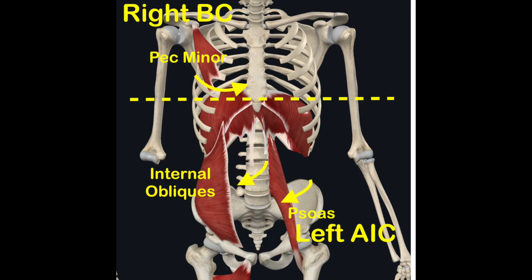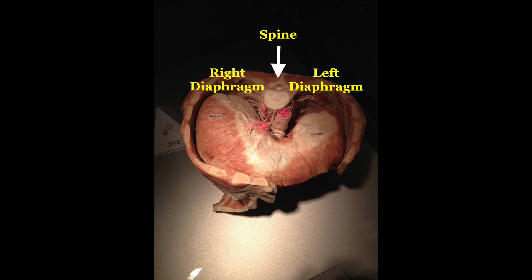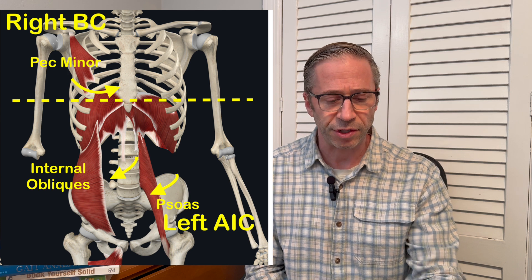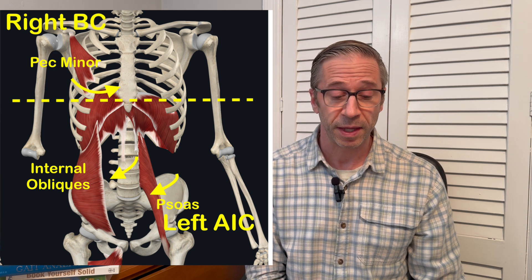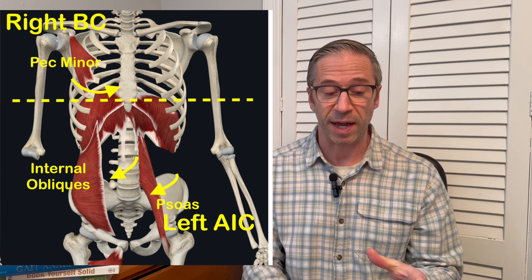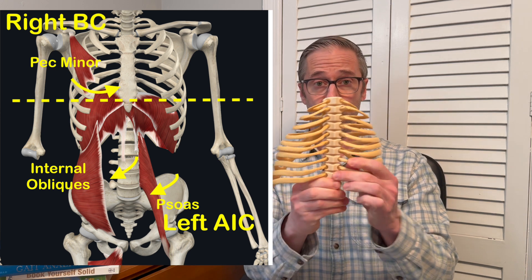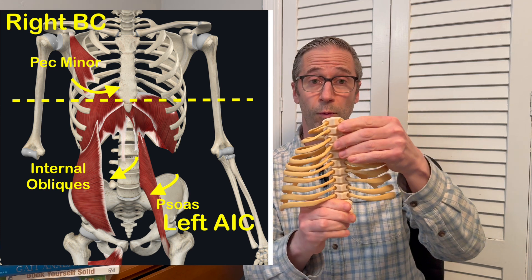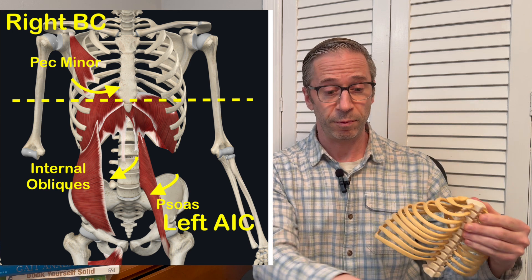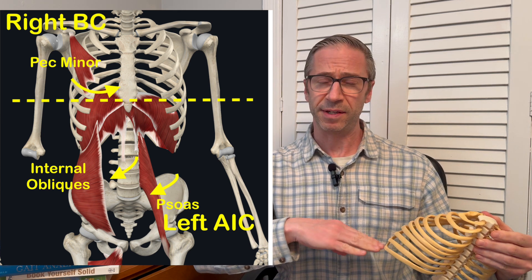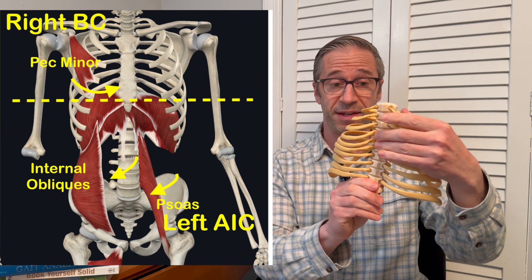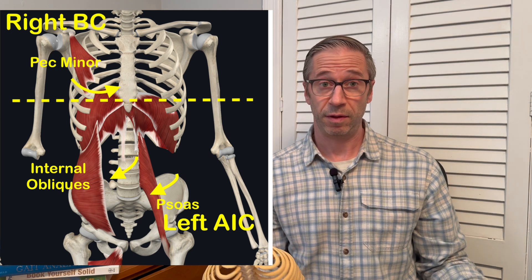The biggest two players in this right brachial chain pattern are probably the right pec minor, the right internal obliques, and the right diaphragm. Because underlying all these patterns is an inherent asymmetry built inside the human body. For the thorax and pelvis, the biggest influence is going to be the bigger right diaphragm. The right diaphragm attaches lower on the lumbar spine and is also bigger, so it has more mechanical advantage to turn the lumbar spine to the right, shifting body weight to the right. From that position, the body has to counter-rotate back to the left, which establishes this right BC pattern.